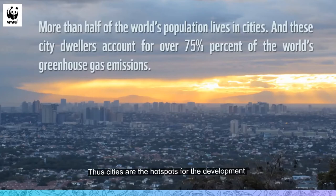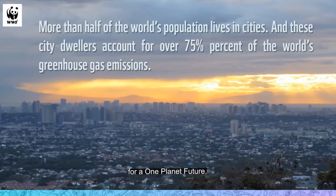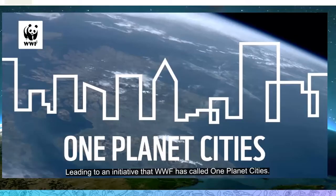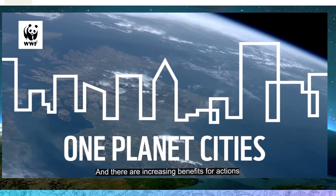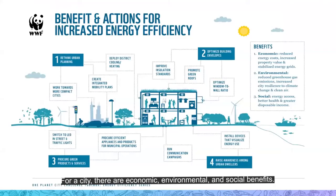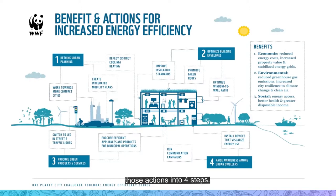Thus, cities are the hotspots for the development and implementation of transformative solutions for a one-planet future, leading to an initiative that WWF has called the One Planet Cities. Part of the transformative solution is to make cities energy efficient, and there are increasing benefits for actions taken to increase a city's energy efficiency — including economic, environmental, and social benefits. These actions have been condensed into four steps.